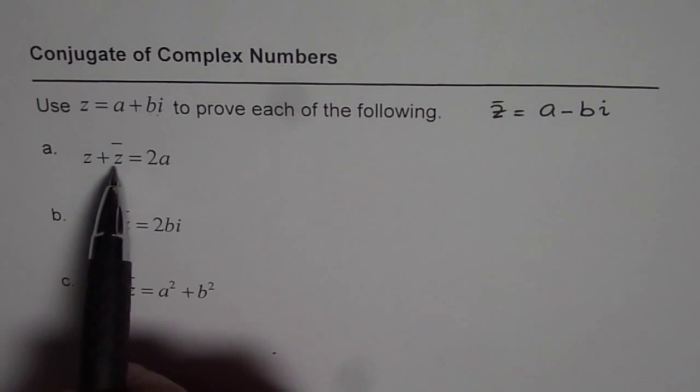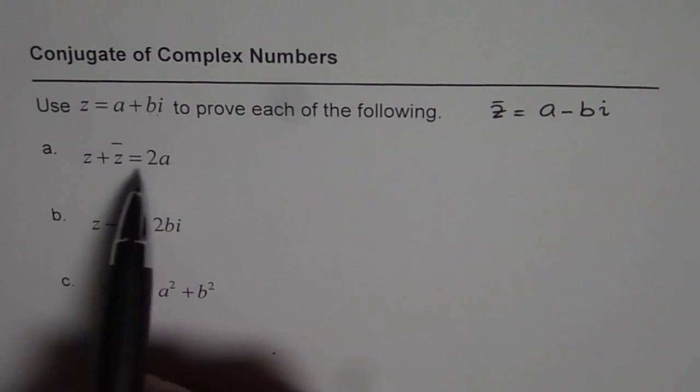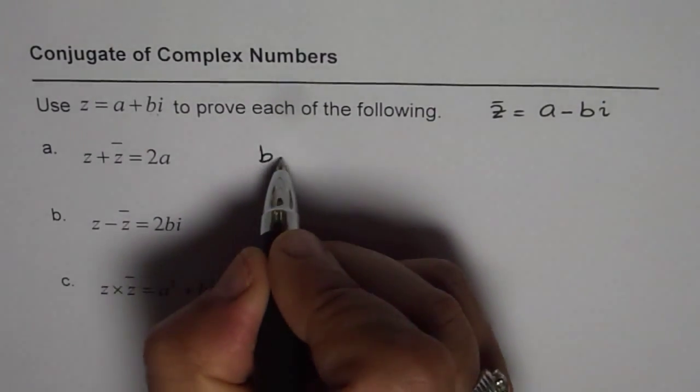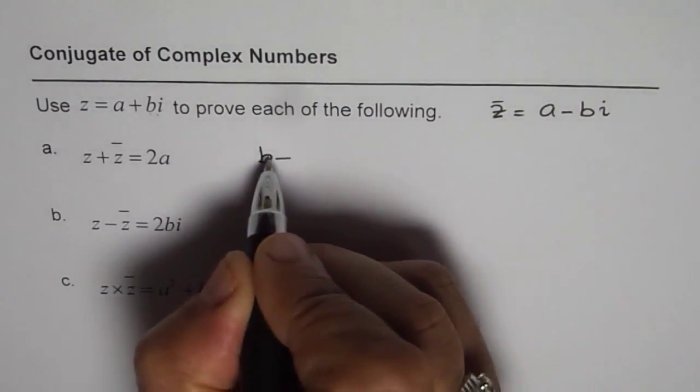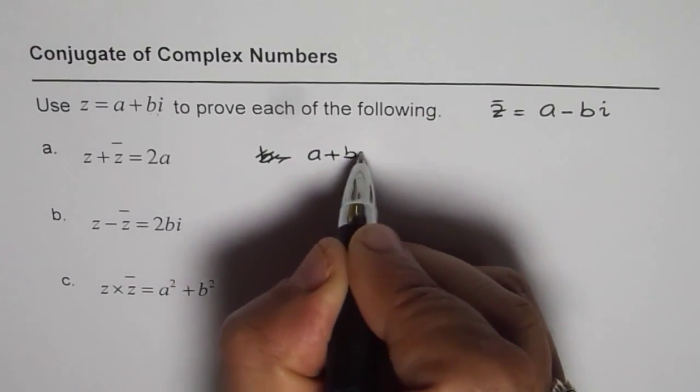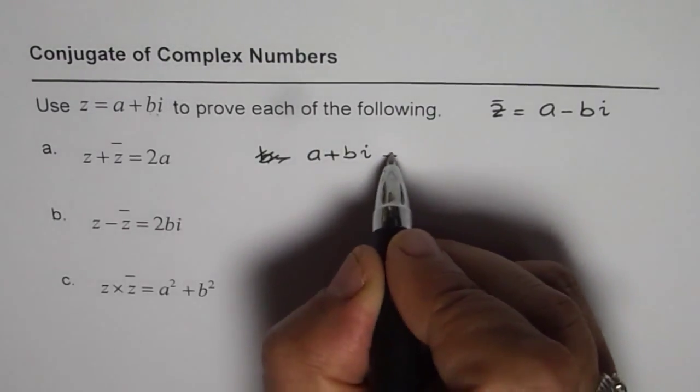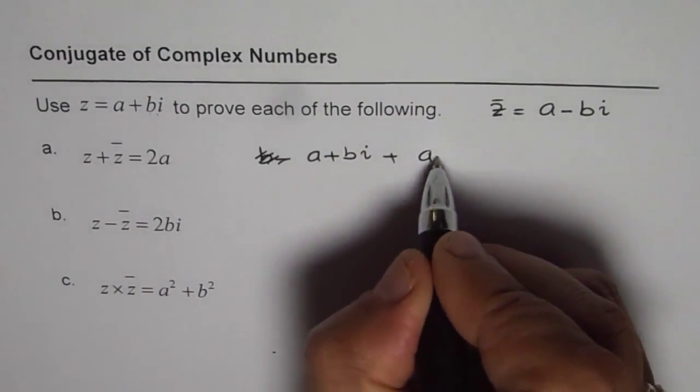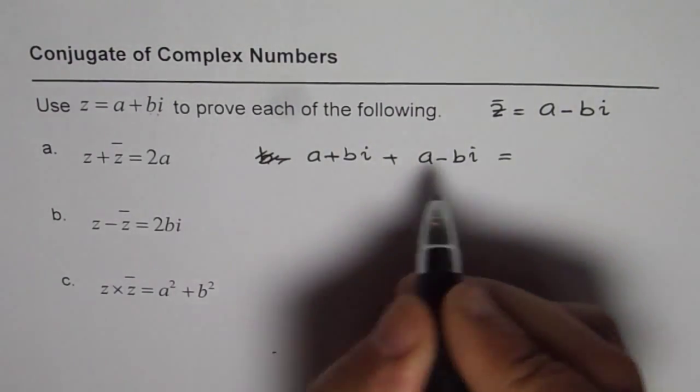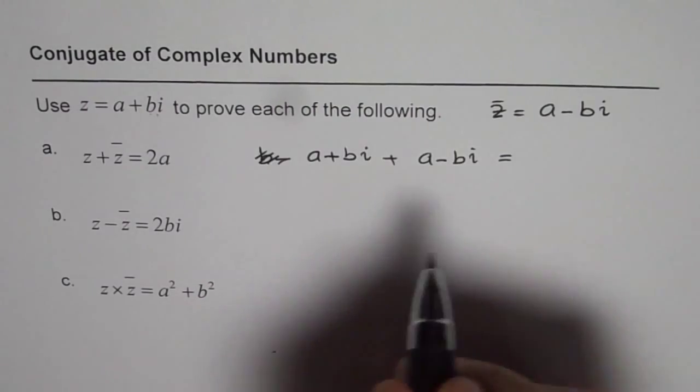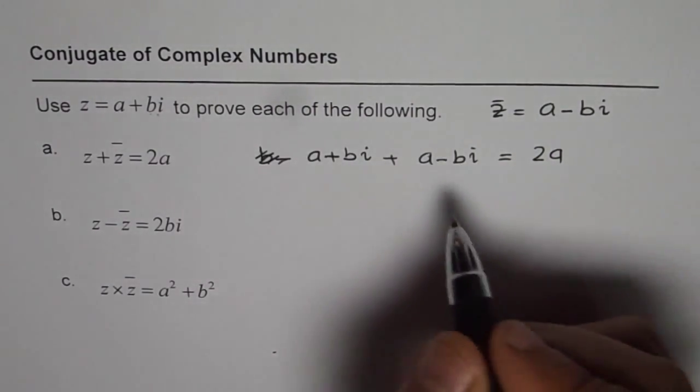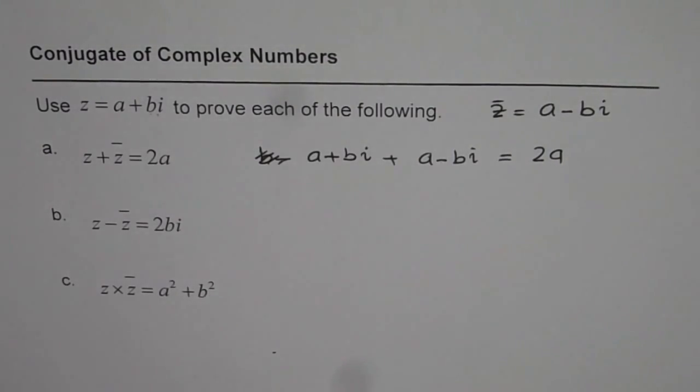First one is z plus z bar equals 2a. We have to prove it. So what is z? Z is a plus bi. So let me write, sorry, so I have to write a plus bi for z plus z bar. Z bar will be a minus bi. If I combine them, a plus a is 2a, and bi minus bi is 0. So we get 2a. So that is how we can prove it.